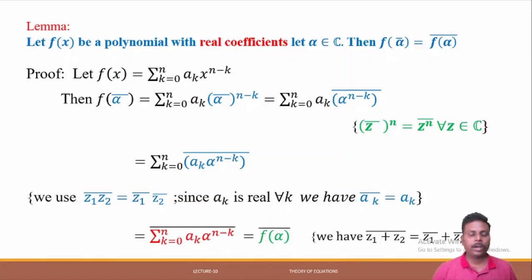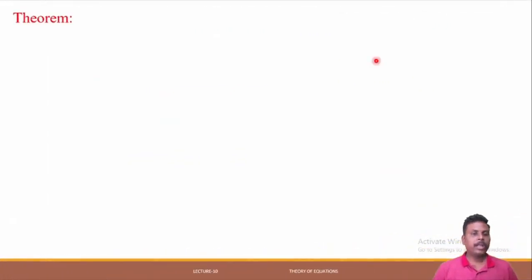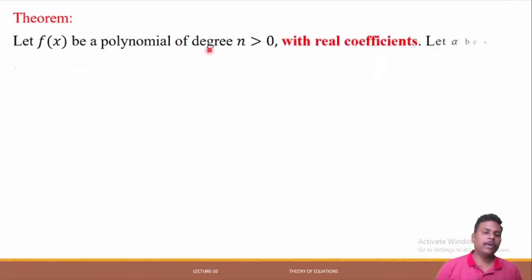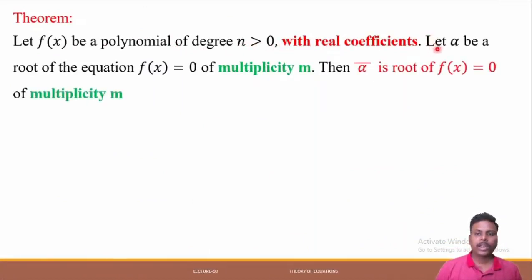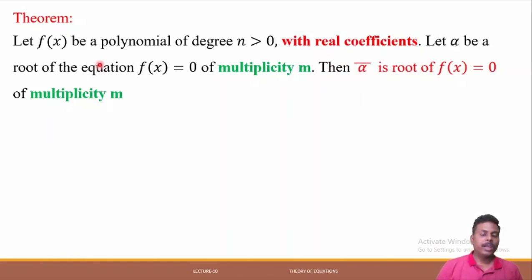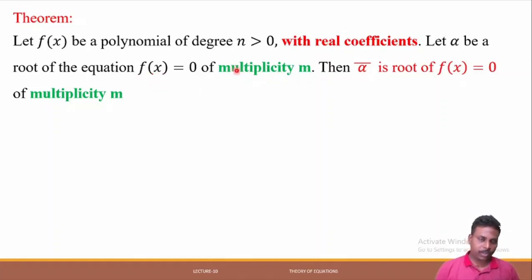We use this lemma to prove a theorem. Let f(x) be a polynomial of degree n > 0 with real coefficients. If alpha is a root of f(x) = 0 of multiplicity m, then its conjugate ᾱ is also a root of f(x) = 0 with the same multiplicity m. This is very important: the coefficients must be real.